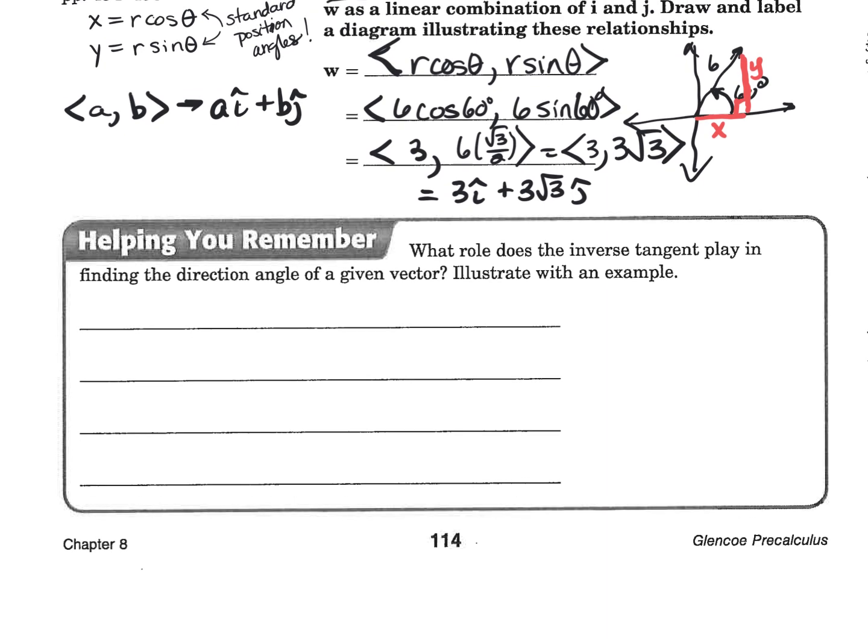So, last chunk of our little review here. What role does the inverse tangent play in finding the direction angle of a given vector? In other words, if we have the vector W and it is equal to (A,B), how do we find the angle? Yeah. It is the inverse tangent of, whoops, not vector. It is the inverse tangent of what? B over A. Okay. Guys, this should look very familiar. If you can do polar to rectangular and rectangular to polar, you can do vectors. It is the exact same stuff. All right? Everybody good?